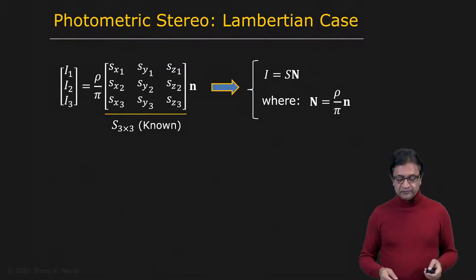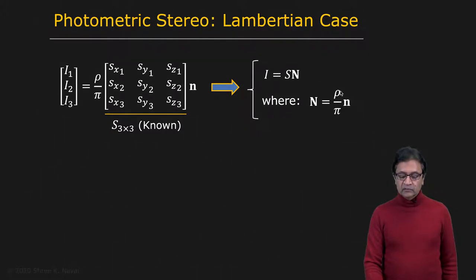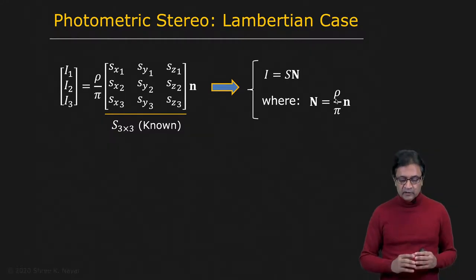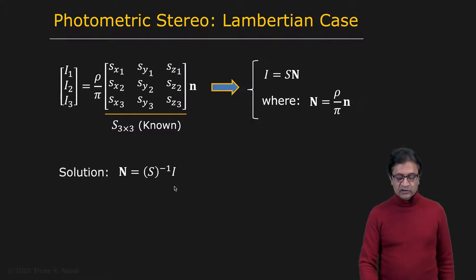The expression can be written as: the vector I equals the source matrix S multiplied by N. Here N is a vector that combines the unit normal and the albedo — it's a scaled version of the normal, scaled by albedo. So you have I equal to S times N, and we know how to solve this: simply invert S and bring it to the other side to get N.